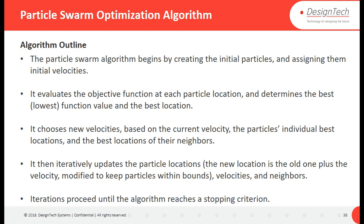The Particle Swarm algorithm outline begins by creating the initial particles, same as Genetic Algorithm, and assigning them initial velocities. It evaluates the objective function at each particle location and determines the best — the lowest function value, since by default MATLAB finds the global or local minimum. Then it chooses new velocities based on the current velocity, the particles' individual best locations, and the best location of their neighbors.